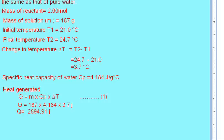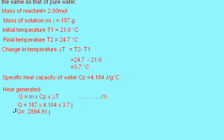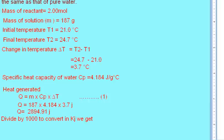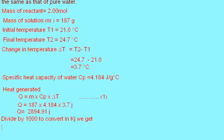To convert to kilojoules, we always divide by 1000. After dividing, Q is equal to 2.89 kilojoules.